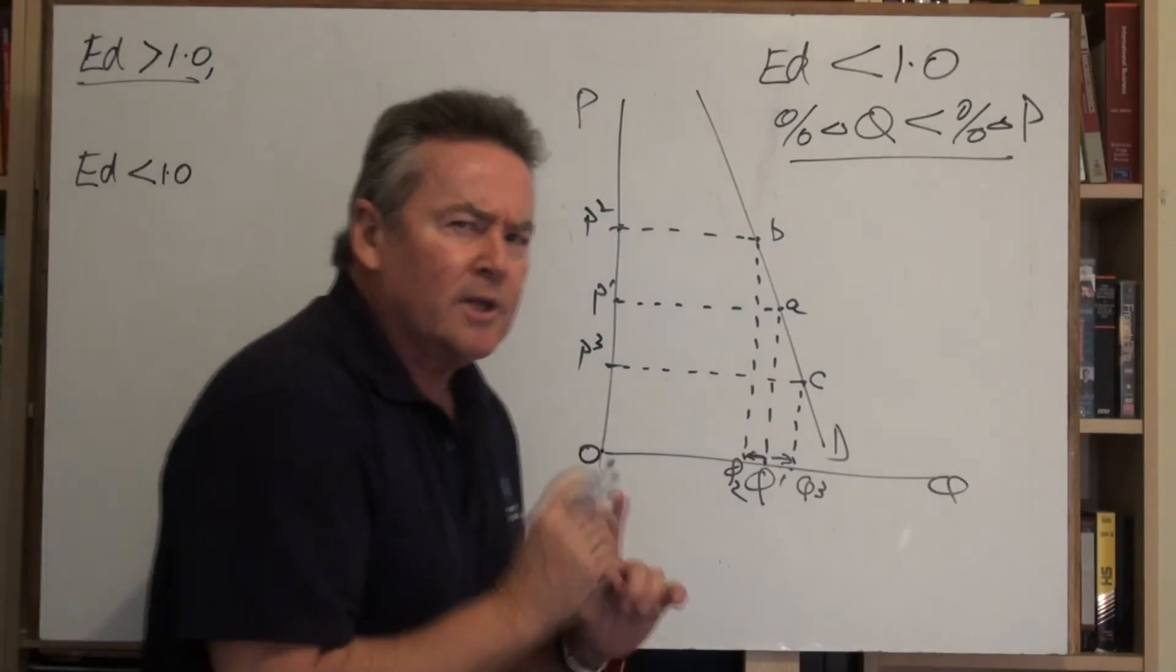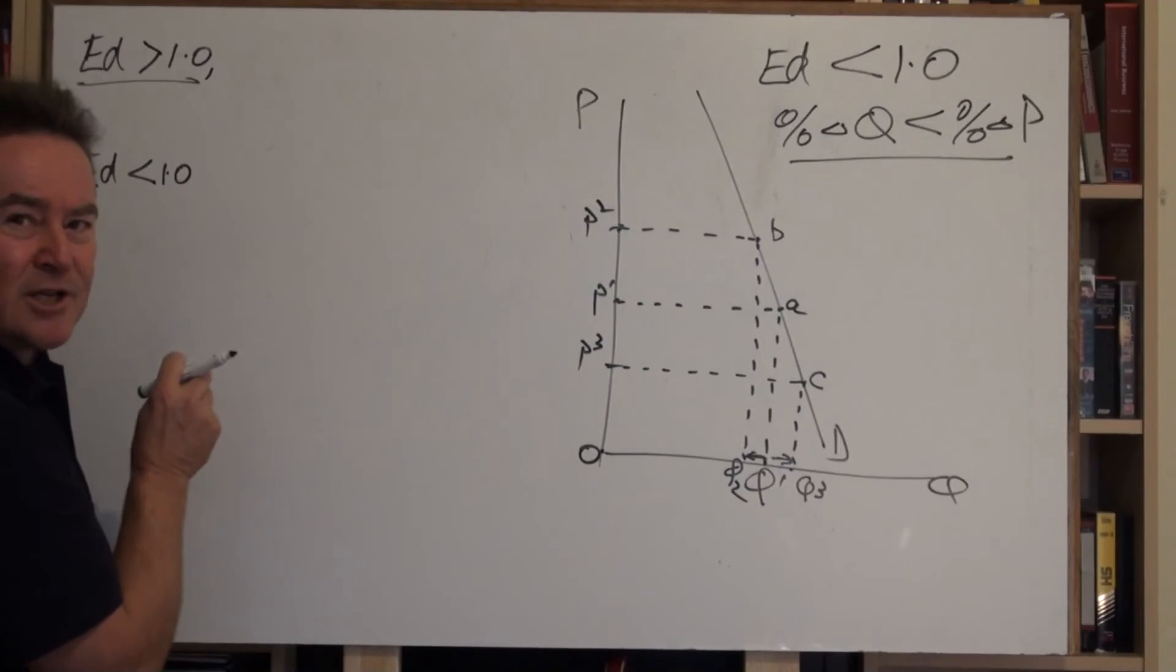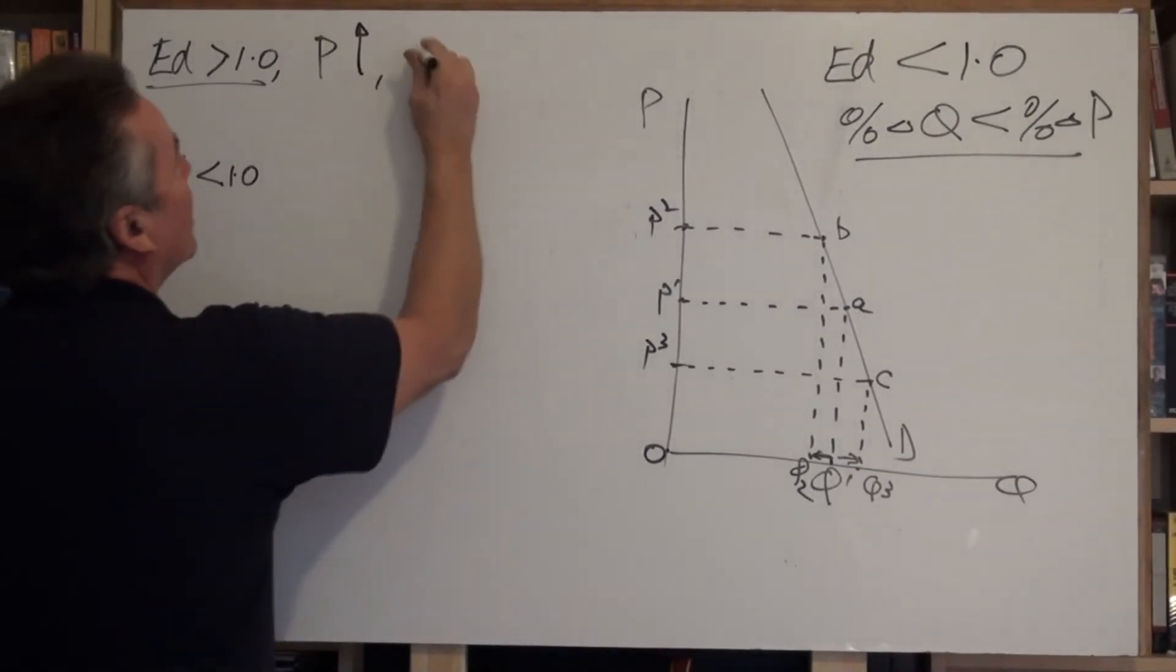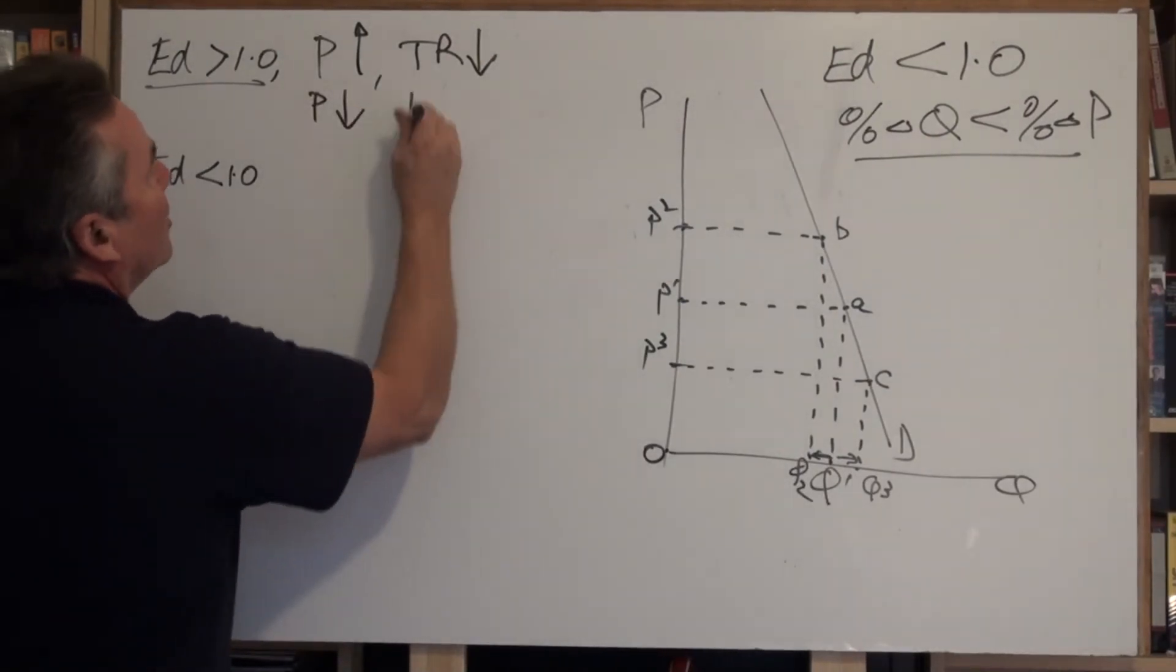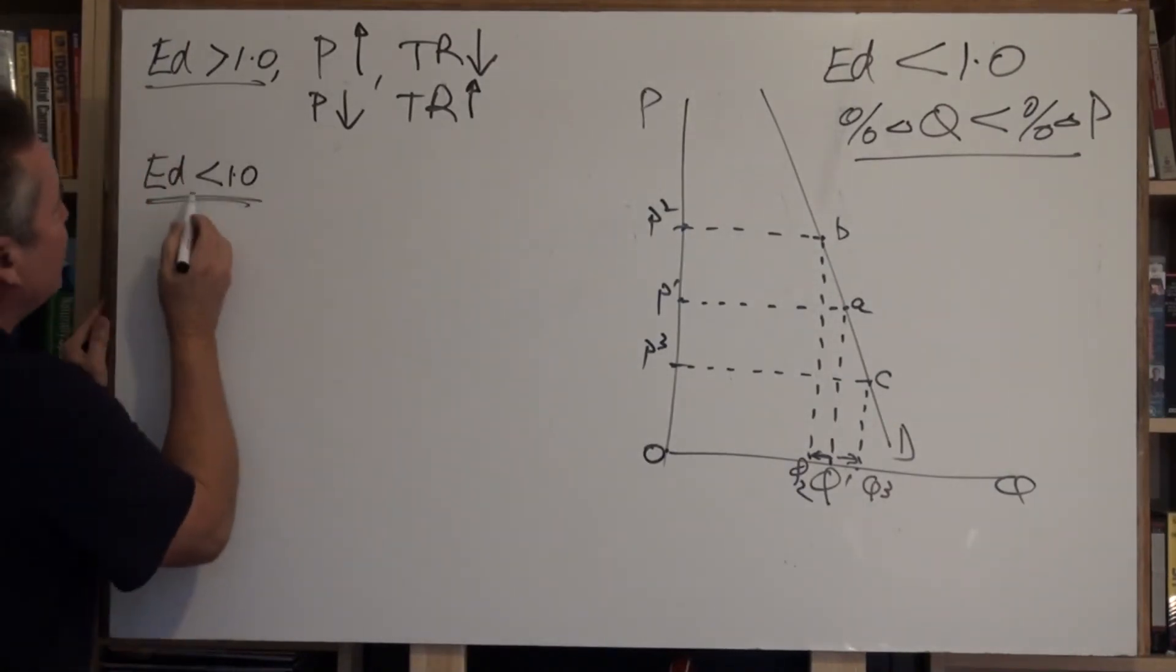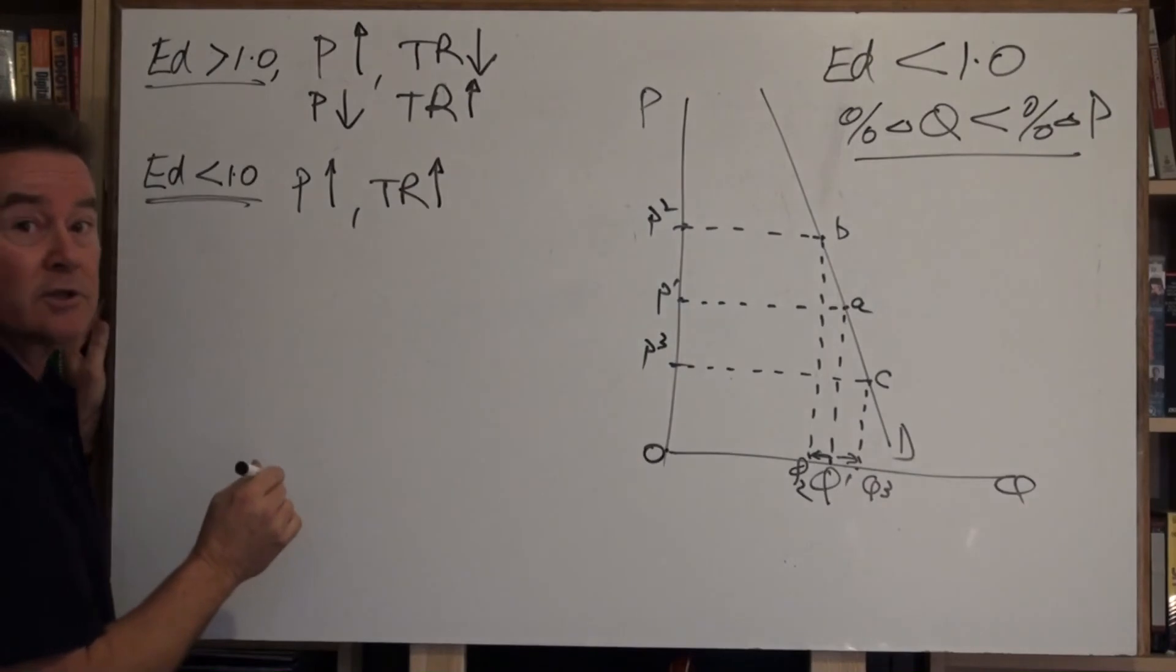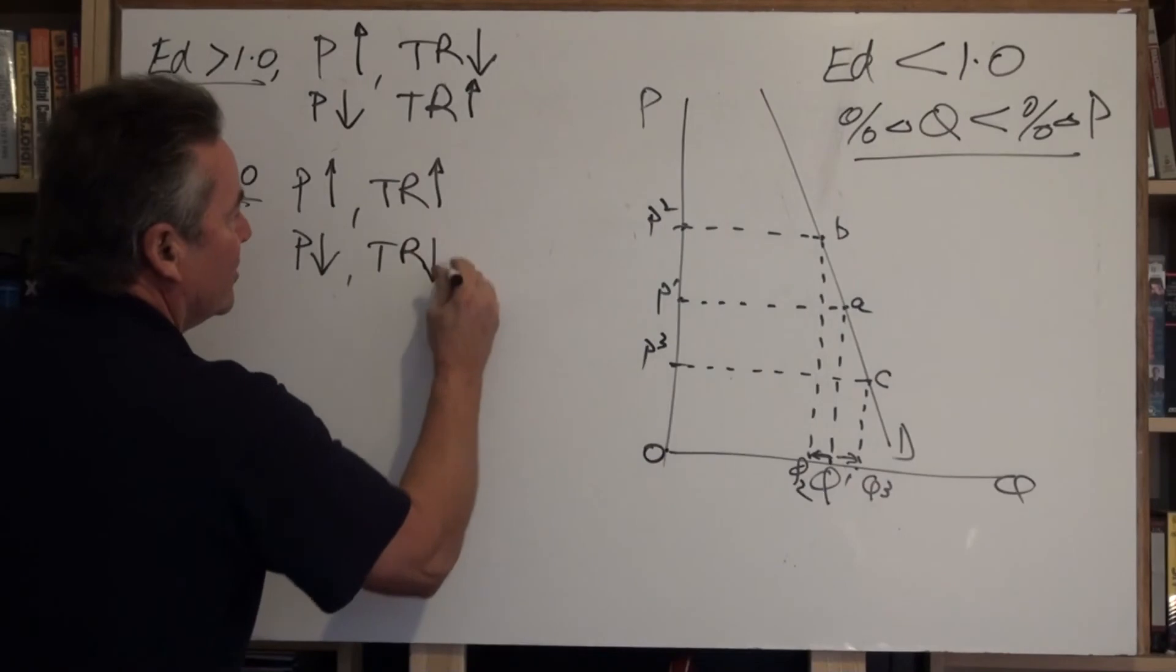Let me quickly summarize. We go back. If demand is price elastic, so we've got an elasticity coefficient greater than 1, for a price rise, total revenue will fall. But for a price fall, total revenue will rise. However, if demand is price inelastic, for a price rise, total revenue will also rise. Good outcome. But for a price fall, total revenue will fall.